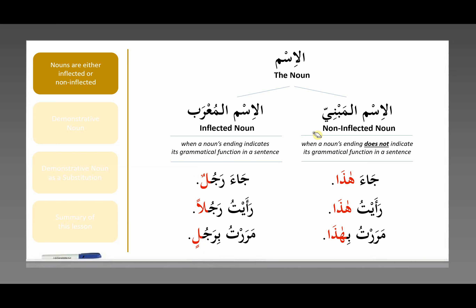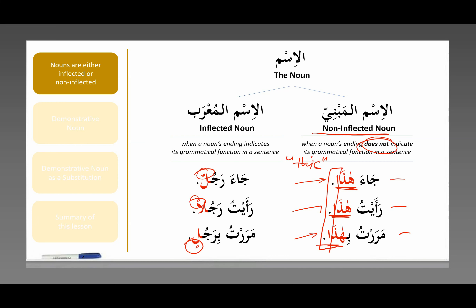Now, let's look at the non-inflected noun — al-ism al-mabni. This is when a noun's ending does not indicate its grammatical function in a sentence. For example, hadha: this one arrived; I saw this one; I passed by this one. I want you to notice that hadha appears in the nominative case, the accusative case, and the genitive case — and yet, all of these words look identical. It's not changing at all. This is a non-inflected noun.